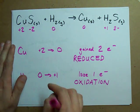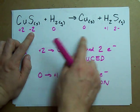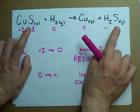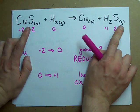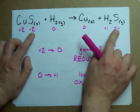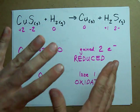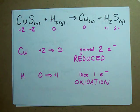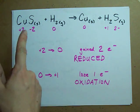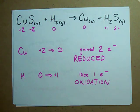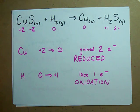Notice the sulfide atoms — that charge didn't change. The oxidation number didn't change, so sulfur wasn't reduced or oxidized, even though it was still present in the reaction. Best of luck assigning oxidations and reductions to your chemical reactions.